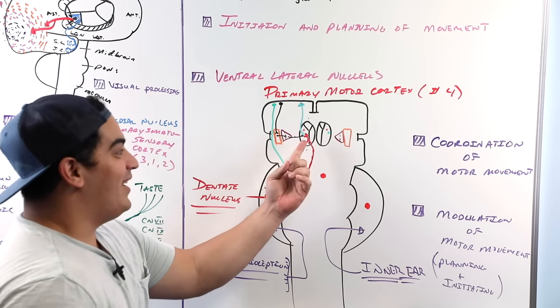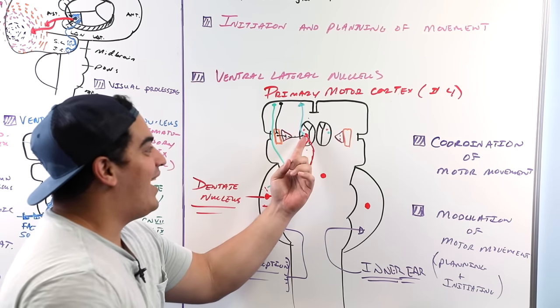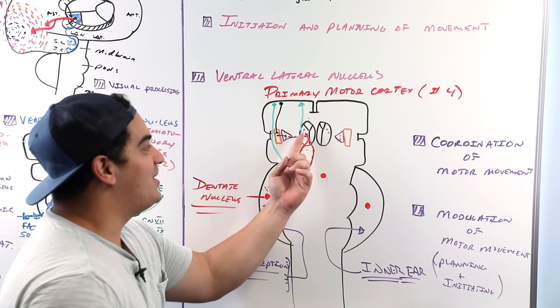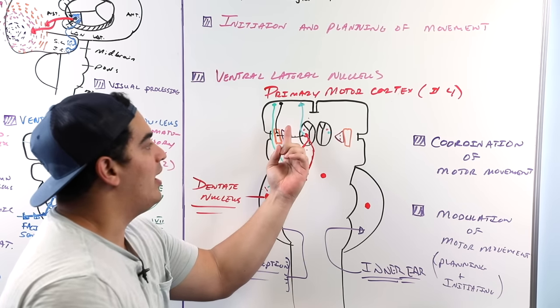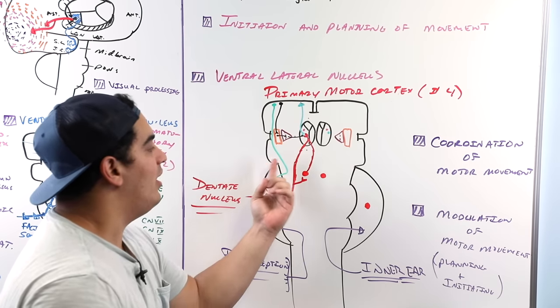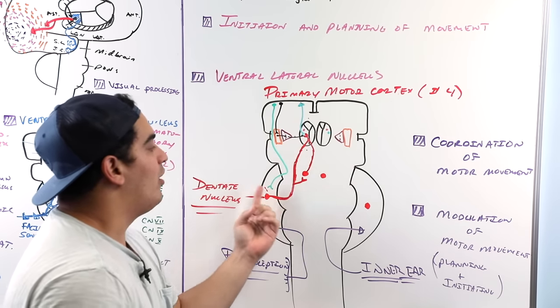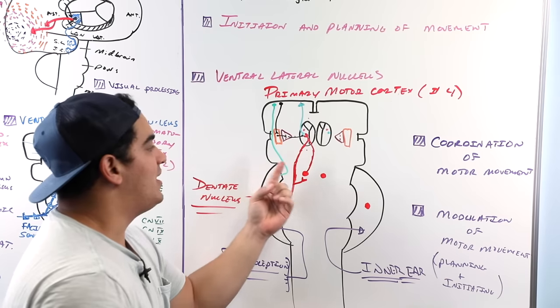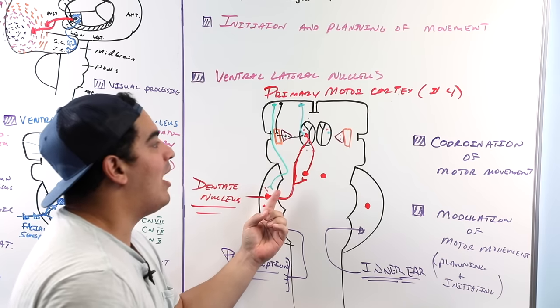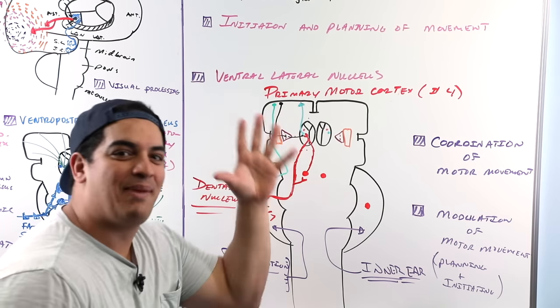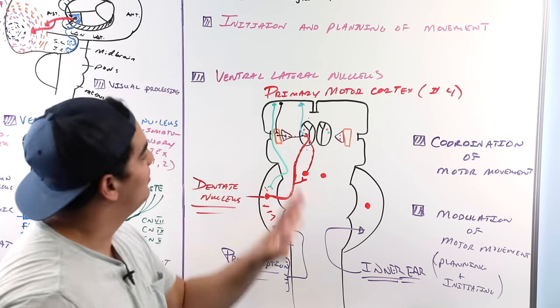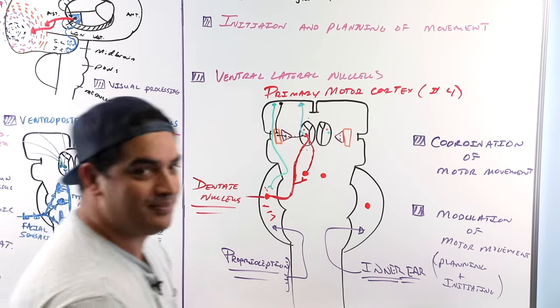The ventral lateral nucleus sends that coordinated and modulated motor information up to the primary motor cortex — Brodmann area 4. So the ventral lateral nucleus receives input from the basal ganglia for modulation and from the cerebellum for proper coordination, and sends it back to the primary motor cortex.